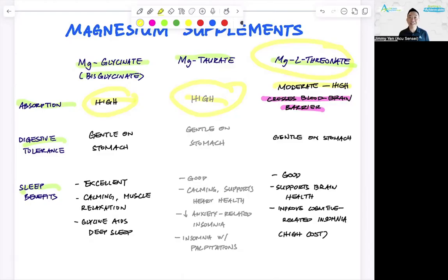Digestive tolerance. If you've taken magnesium supplement, you've probably experienced some GI upset, diarrhea, bloating, gas, and so forth. Because there's a specific form, magnesium citrate, that actually acts as a laxative. That is not one of the ones for insomnia, as you can see. So all three of these are gentle on the stomach. Now, is that the same case for everybody? No, it's case dependent, it's individualized. That's why you need to work with a practitioner who has experience with thousands of patients like our clinic.